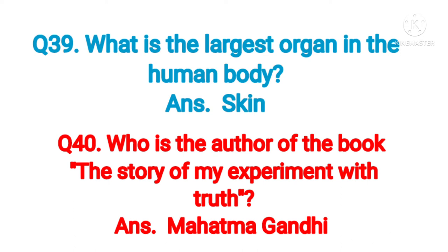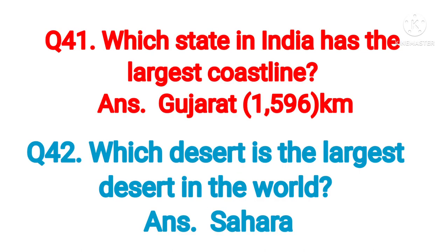Question number forty: who is the author of the book The Story of My Experiments with Truth? Answer: Mahatma Gandhi. Question number forty-one: which state in India has the largest coastline? Answer: Gujarat, 1596 kilometers.